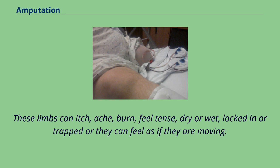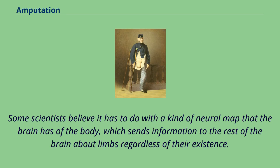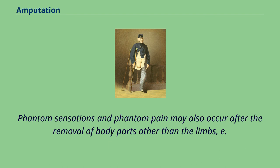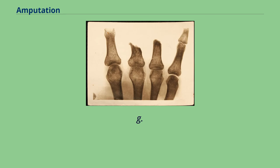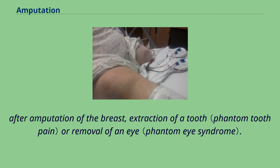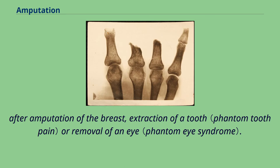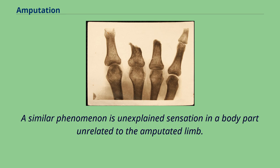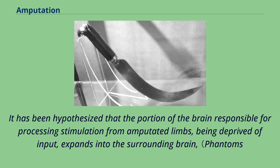Some scientists believe it has to do with a kind of neural map that the brain has of the body, which sends information to the rest of the brain about limbs regardless of their existence. Phantom sensations and phantom pain may also occur after the removal of body parts other than the limbs, e.g., after amputation of the breast, extraction of a tooth, or removal of an eye. A similar phenomenon is unexplained sensation in a body part unrelated to the amputated limb. It has been hypothesized that the portion of the brain responsible for processing stimulation from amputated limbs, being deprived of input, expands into the surrounding brain.